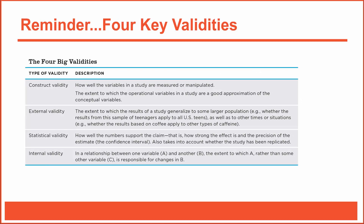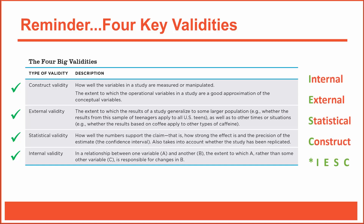Before we get too deep into the woods, here's a reminder of the four validities with brief descriptions of each. Feel free to pause the video to review them. Previously I suggested committing these four types of validity to memory, and I tend to remember them in this order: internal, external, statistical, construct. Those first letters spell out I-E-S-C, which I find helpful.